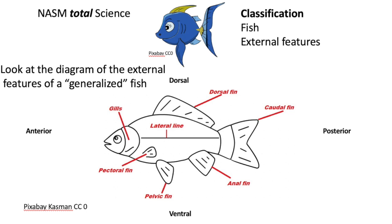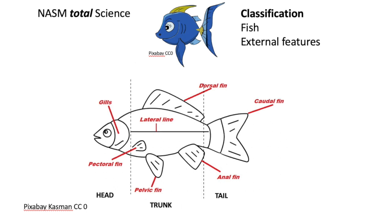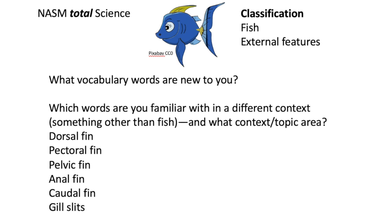back, top, lower, dorsal, ventral, anterior, front, posterior namings, and dividing the fish into three regions: head, trunk, and tail. Those are the main vocabulary words, and some of them have context in everyday life and other areas.